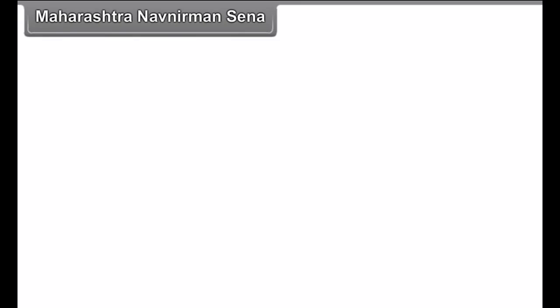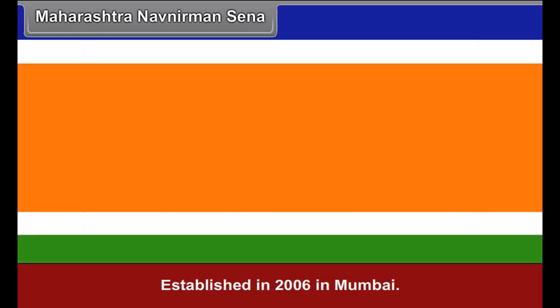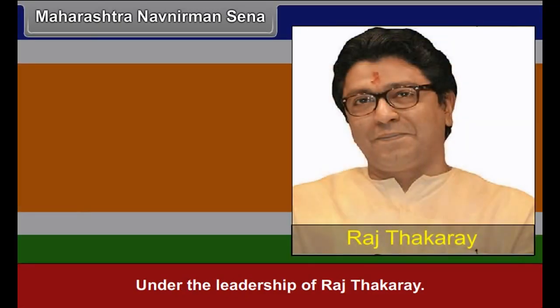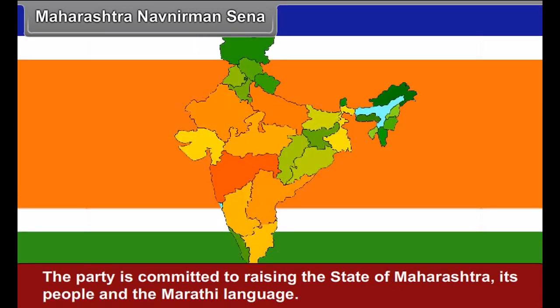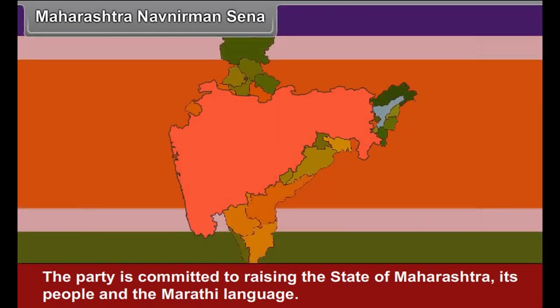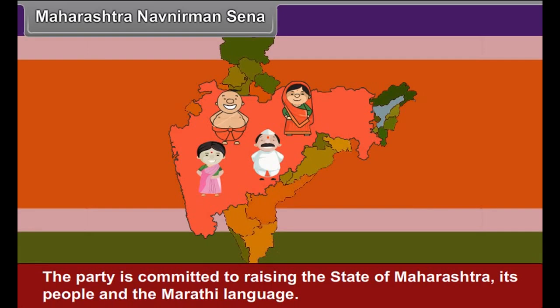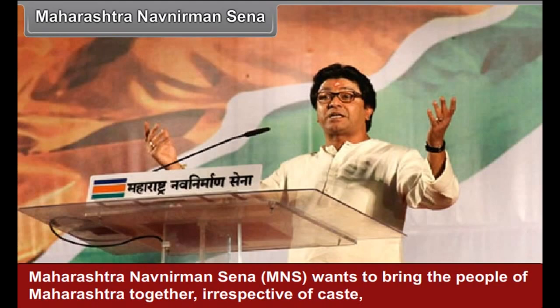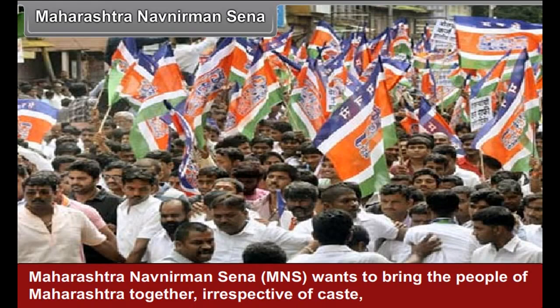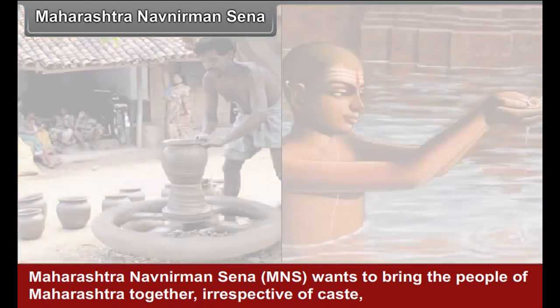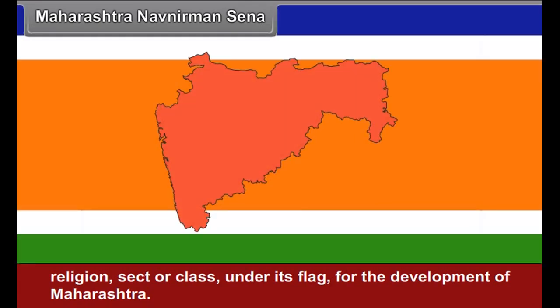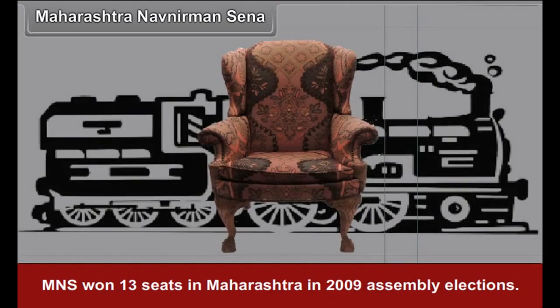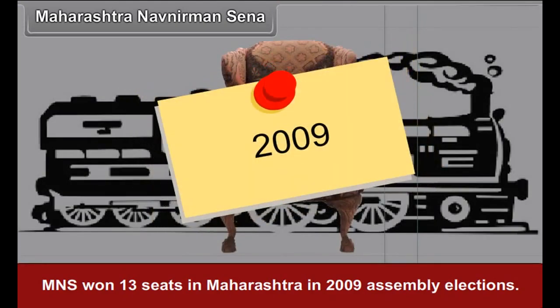Maharashtra Navnirman Sena: Established in 2006 in Mumbai under the leadership of Raj Thackeray, it was a breakaway group from Shiv Sena. The party is committed to raising the state of Maharashtra, its people, and the Marathi language. MNS wants to bring the people of Maharashtra together, irrespective of caste, religion, sect, or class, under its flag for the development of Maharashtra. MNS won 13 seats in Maharashtra in the 2009 assembly elections.